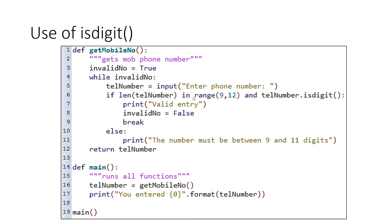Here is another example where we're going to use isdigit and also the range function. You've seen range before when doing a for loop with 'for something in range.' Starting at main, main kicks off this main function, which has a call to getMobileNo. It's going to come back with a telephone number. You're going to have invalid set to true again. Then you get some input. The important bit is: if the length of that telephone number you just put in is in range 9 to 12 — remember range starts from 9 and goes up to but is exclusive of the second number, so that's 9 to 11, not 12. And it's also checking if the telephone number is a digit.